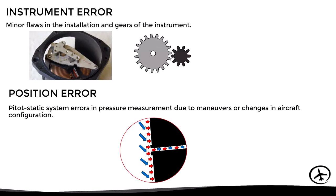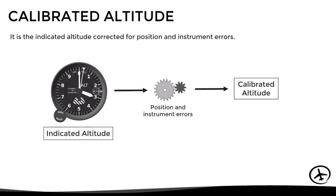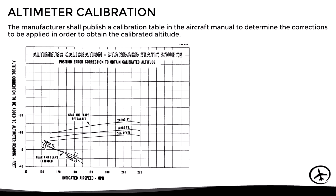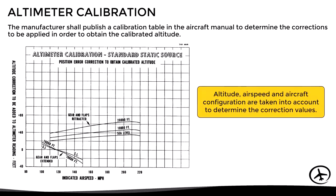As a result of these errors, we have the concept of calibrated altitude. This is defined as the indicated altitude corrected for position and instrument errors. However, usually these errors tend to be small, and therefore in practice it is normally assumed that the indicated altitude and calibrated altitude are roughly equal. The manufacturer publishes an altitude calibration table in the aircraft manual, which specifies the corrections to apply. In this table, altitude, airspeed, and aircraft configuration are taken into account to determine the correction values.